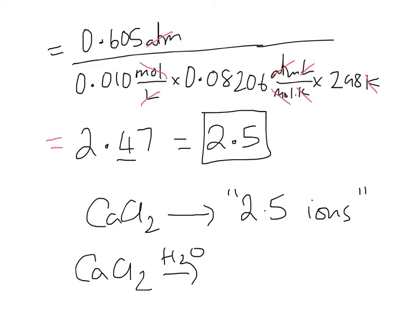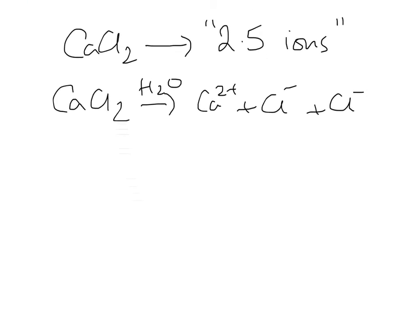Which is kind of a surprise, because we would expect when we dissolve it for it to break down into three things. We'd expect it to break down into a calcium and a chloride and another chloride, and so presumably, theoretically, i should be three. And the question, of course, is how come it's only two and a half?